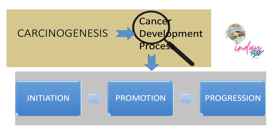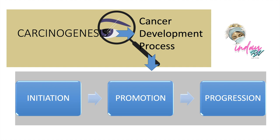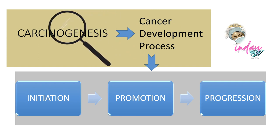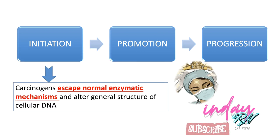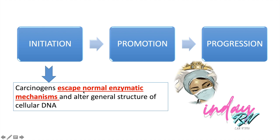If you say carcinogenesis, that means it is already the development of cancer cells in the body. Here in initiation, carcinogens escape normal enzymatic mechanisms and alter the general structure of cellular DNA. There is already a damage and mutation to the DNA, causing excessive cell division due to excessive oncogene function but decreased suppressor gene function. This means there is already a derangement from normal function, altering the general structure of the cell. Initiation is where everything started.